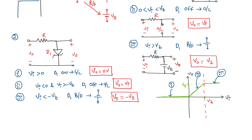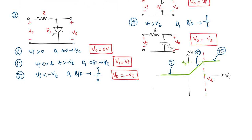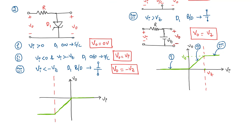Drawing the transfer characteristics for the second circuit: the first region corresponds to Case 1, the second region where output voltage equals input voltage corresponds to Case 2, and the third region where output voltage equals minus Vz corresponds to Case 3.